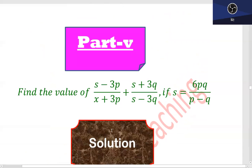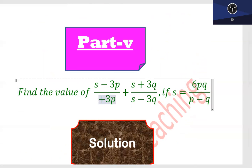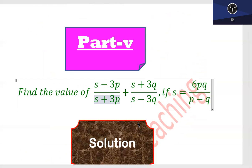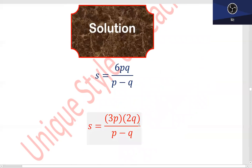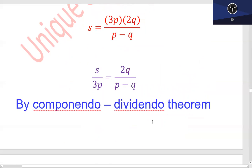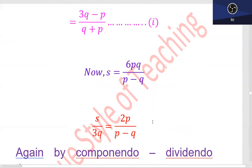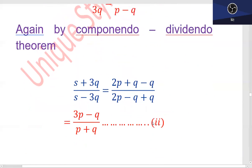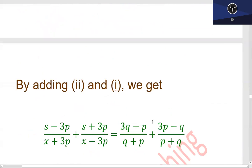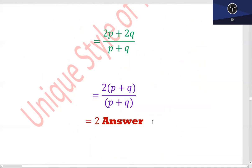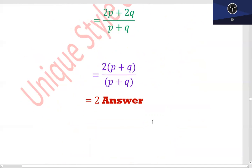Part 5: (s - 3p)/(s + 3p) + (s + 3q)/(s - 3q), if s is equal to 6pq/(p - q). یہاں پر 6 کے factors بنائے: 3 اور 2۔ s upon 3p کیا، componendo اور dividendo theorem use کیا، ایک value مل گئی۔ دوسری value کے لیے s upon 3q کیا، یہ component to dividendo method use کیا۔ Simplify کریں گے، 2 common لیں گے — (p + q) اور (p + q) کے ساتھ cancel out ہو جائے گا — 2 will be the answer.